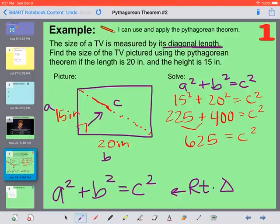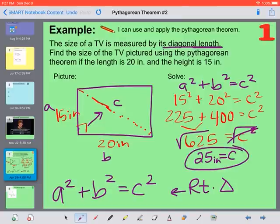And then last, to get rid of our square, we take the square root to undo. Those eliminate. And the square root of 625 gives us a nice 25. So the diagonal length of this TV is 25.